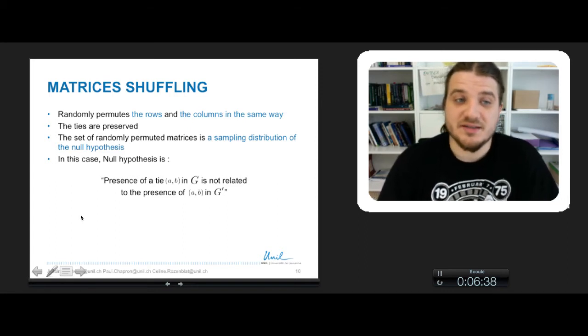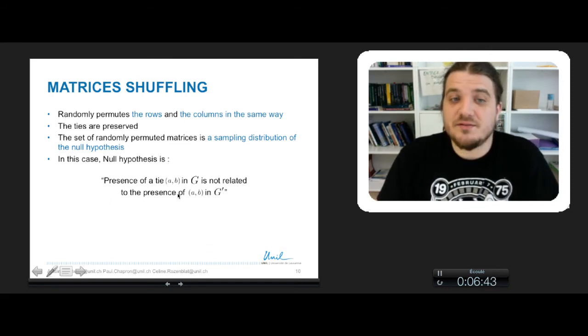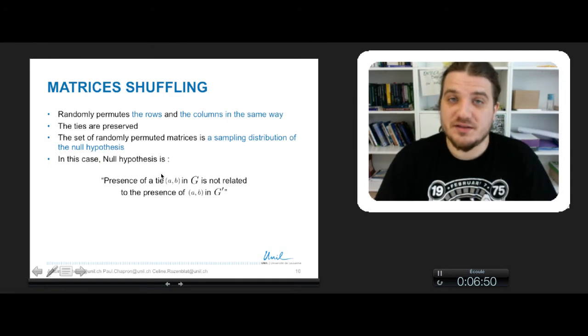In this case, the null hypothesis is the presence of a tie AB in G is not related to the presence of the link AB in G'. So we shuffle matrices to produce a null hypothesis distribution.